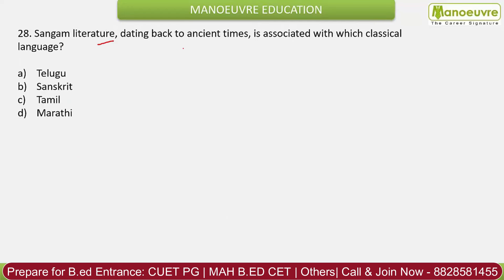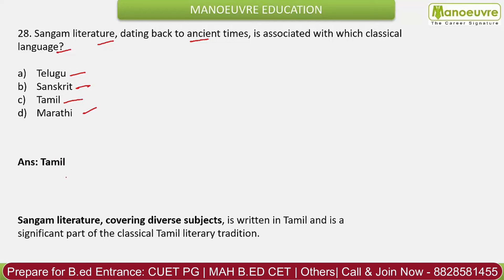Question 28: Sangam literature, dating back to ancient times, is associated with which classical language? Options: Telugu, Sanskrit, Tamil, Marathi. The correct answer is Tamil. Sangam literature covers diverse subjects and is written in Tamil.